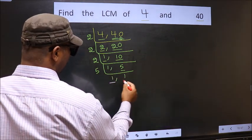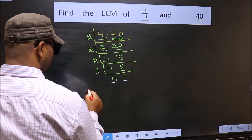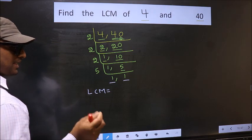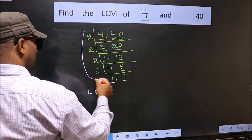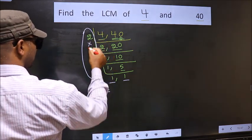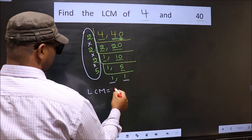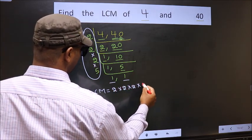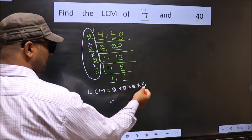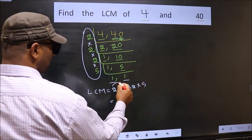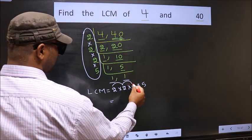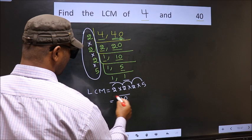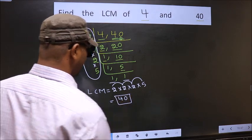We got 1 in both places. So our LCM is the product of these numbers: 2 times 2 times 2 times 2 times 2 times 5. Let us multiply: 2 times 2 is 4, times 2 is 8, times 5 is 40. So 40 is our LCM.